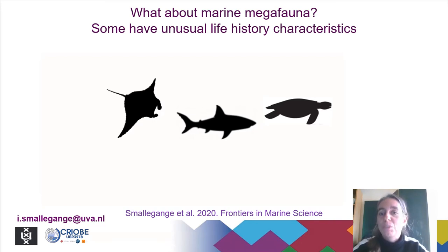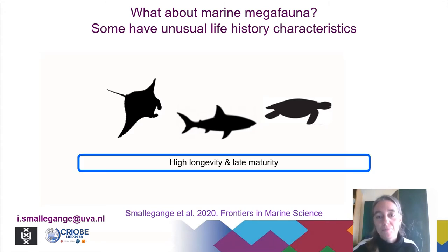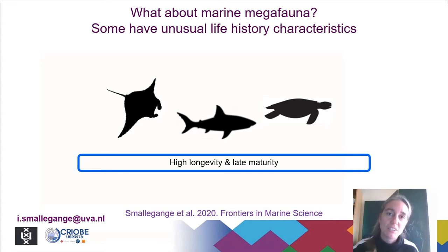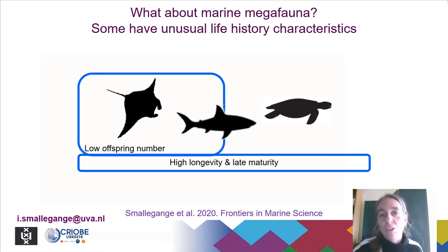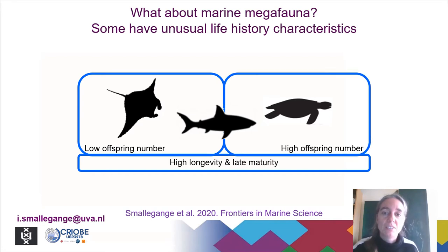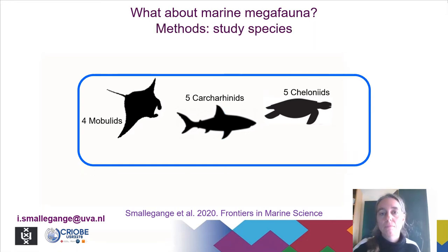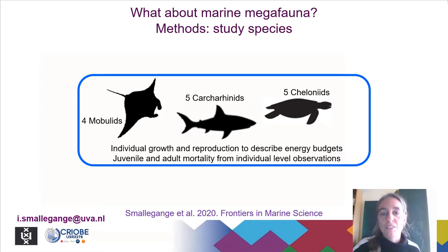The reason we were asking this is because marine megafauna have some unusual life history characteristics. For example, many species can be characterized by high longevity and late maturity, which is characteristic of slow life histories, yet they have very high offspring numbers, which is more characteristic of fast life histories. In this study we looked at life history data of four mobulid species including giant manta rays, four reef shark species, and five sea turtle species, and we collected data from the literature on individual growth and reproduction to describe their energy budgets.